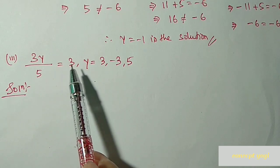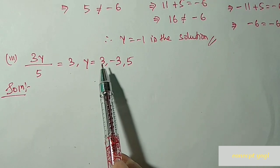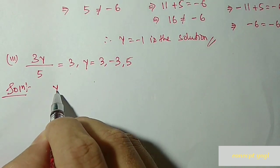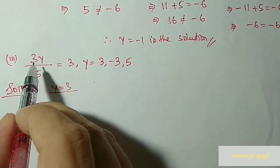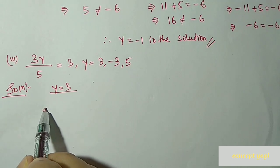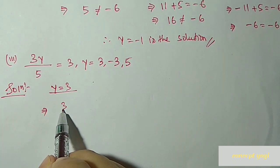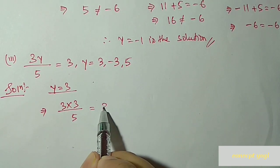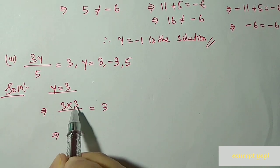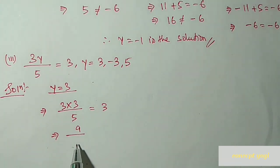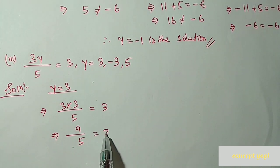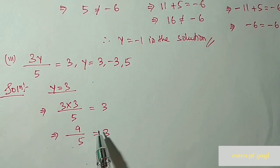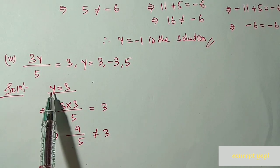Next, question number 3 — we use the same method, putting y values one by one. The equation is 3y divided by 5 equal to 3. For y equal to 3: 3 into 3 divided by 5 equal to 3. 3 into 3 is 9, so 9 by 5 equals 3 — left side 9/5 and right side 3 are not equal. So y equal to 3 is not the solution.